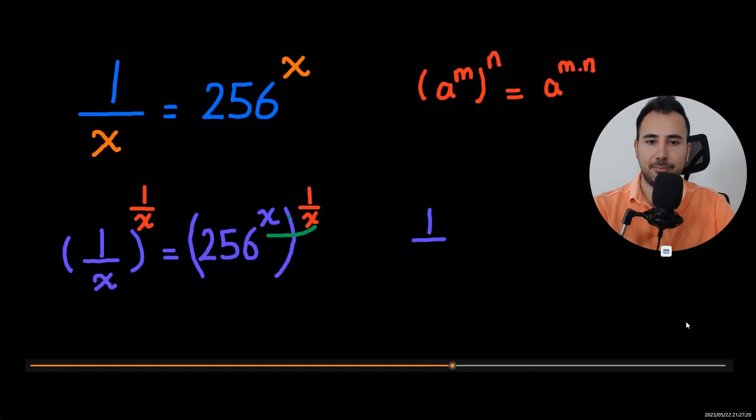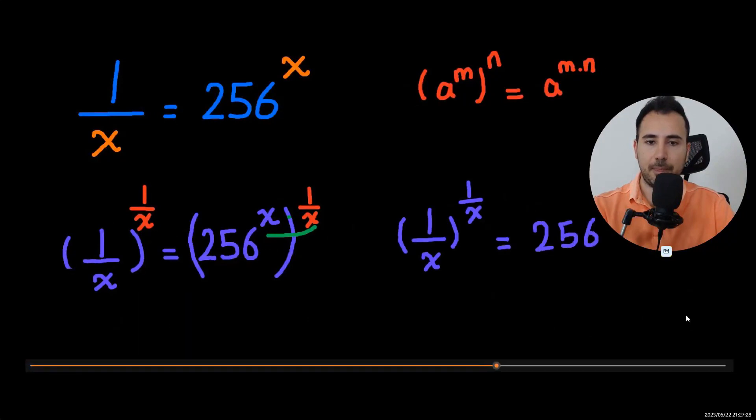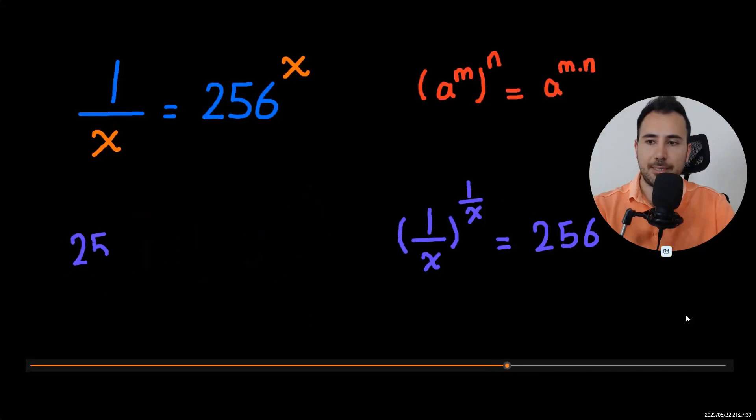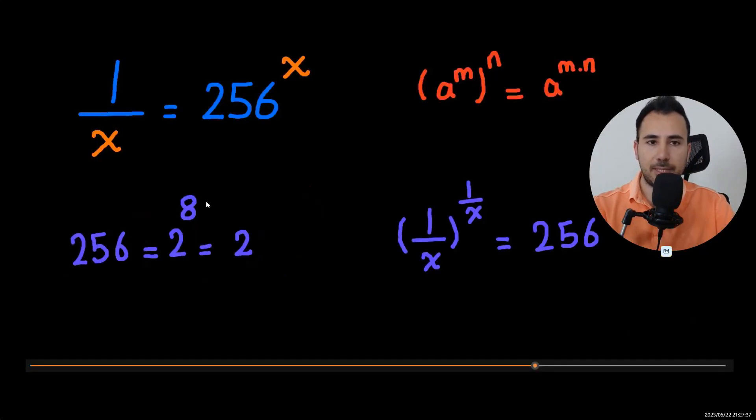So instead of 256, what can we write? Now, you see 8. If we assume 8 is m times n, we need two numbers that are multiplied then become 8. So I'm going to go with 2 and 4.